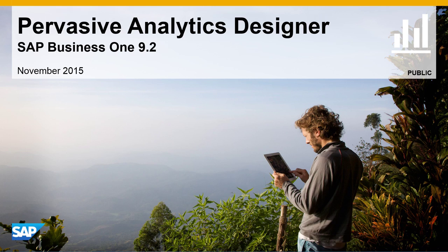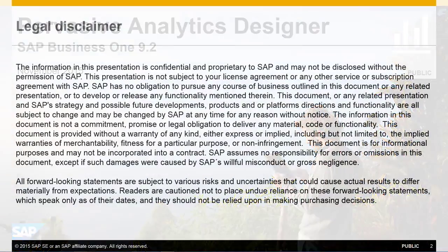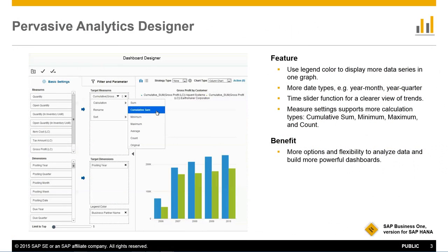Welcome to our feature clip highlighting the enhancements to the Pervasive Analytics Designer in SAP Business 1 Release 9.2. A number of improvements have been implemented to give users more flexibility to analyse data and build more powerful dashboards. You can use legend colour to split data by an additional dimension, displayed in different colours within a graphic.